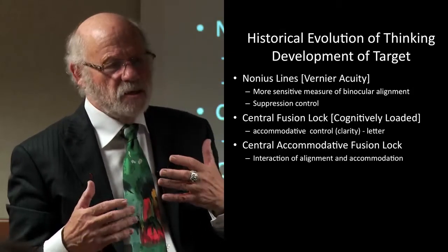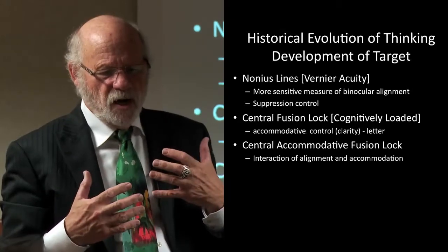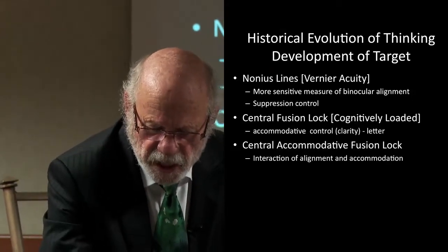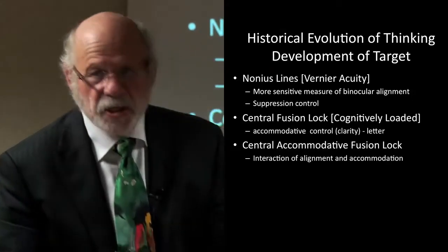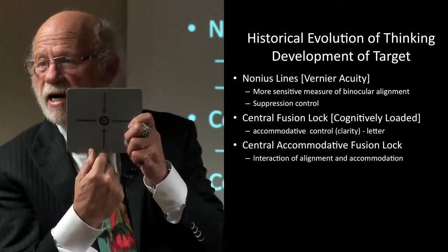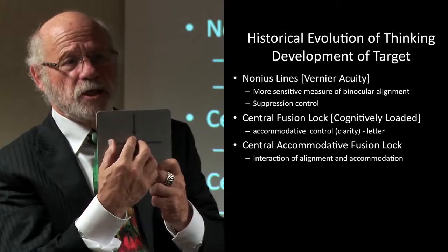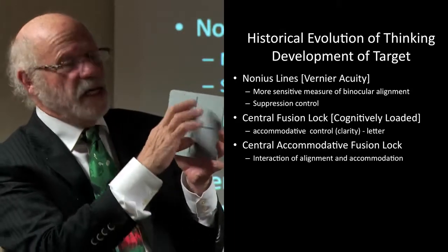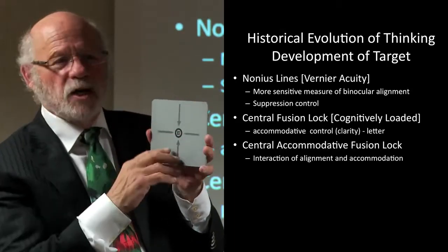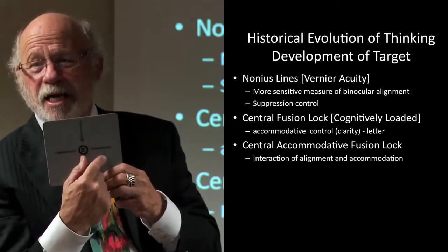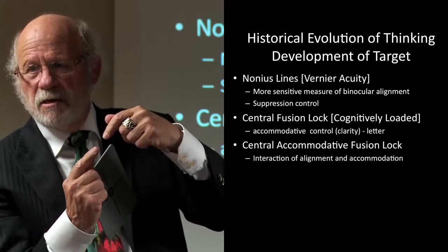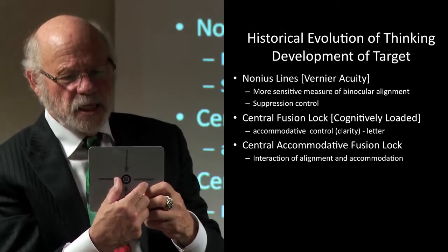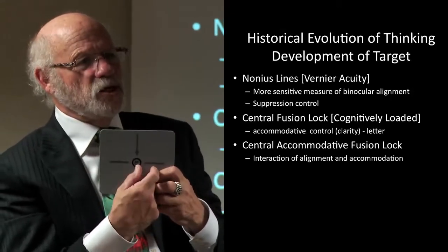We use nonius lines — vernier acuity. Vernier acuity is hyperacuity in the visual system. There's a suppression clue and an acuity measure here. This is the far point target. When these lines are offset — or as one little girl said, when they zigzag — when they start sliding, they're causing a disparity, but not enough stress yet to break into double. So it's a highly sensitive measurement of ocular alignment, with both suppression control and accommodative control.